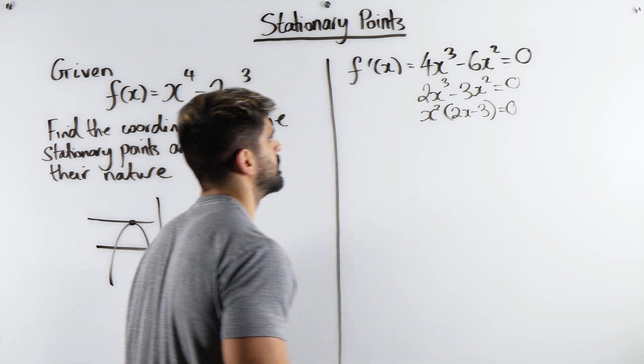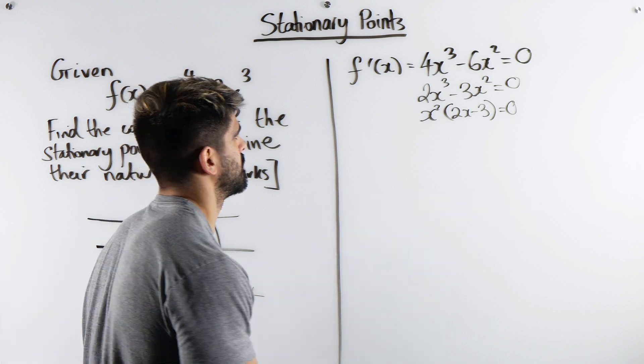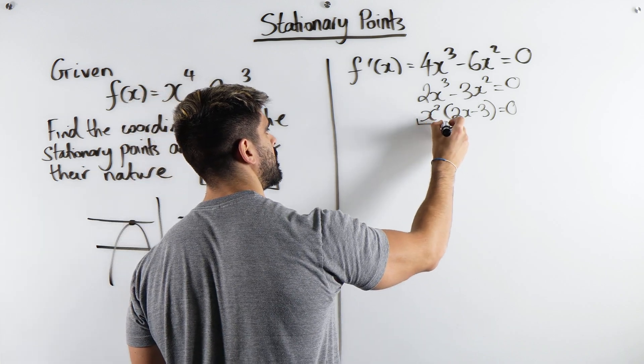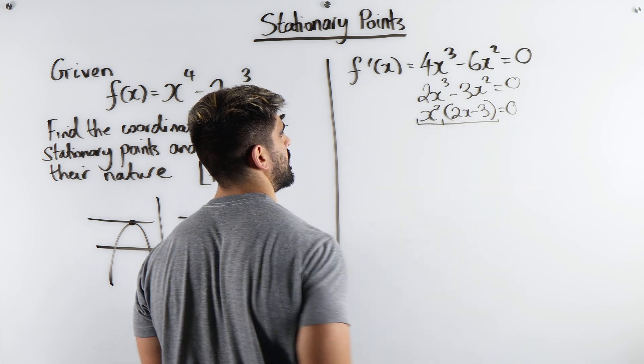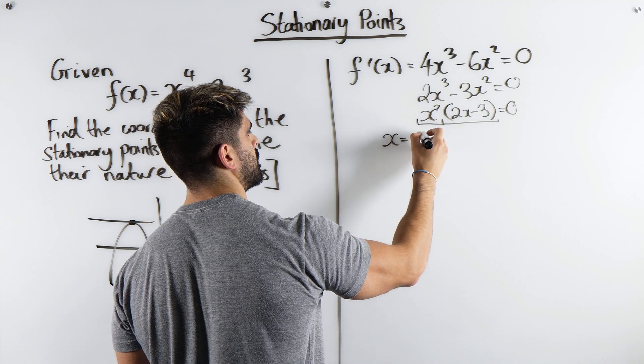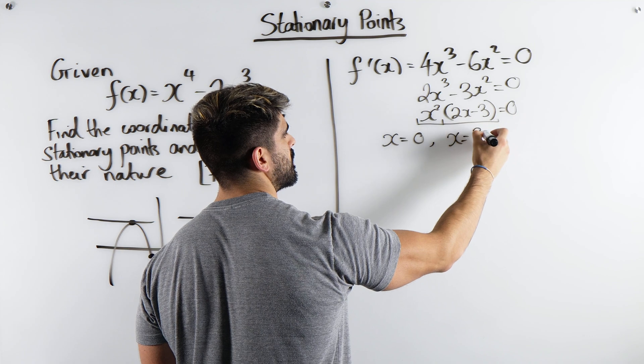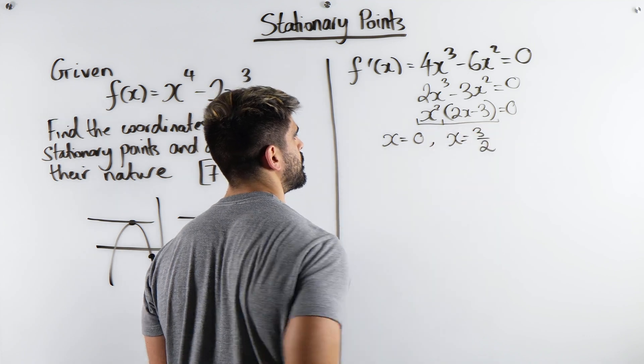So it looks like we're going to have two stationary points. 1 and 2. So we're going to get x is 0 and x is, so when you make that equal to 0, you're going to move the 3 over and divide by 2.